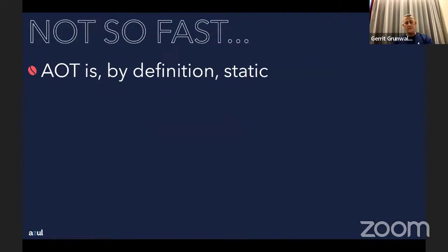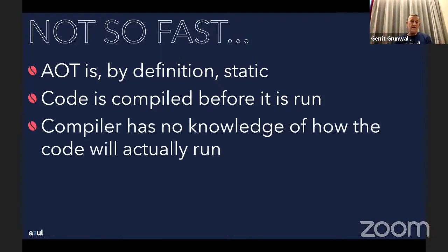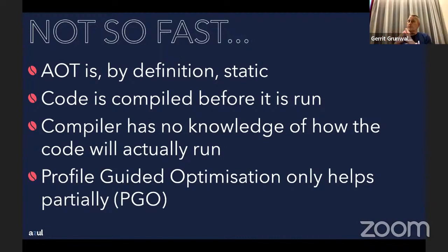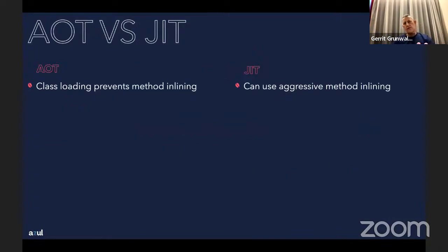Ahead-of-time compilation is by definition static — the code is compiled before it runs. The JVM compiles and optimizes code while it's running, but with AOT the compiler has no idea what the code is actually doing at runtime. You can improve this with profile-guided optimization: profile the running code, save the profile, and apply it to the compiled code. That gives you some benefit for the scenarios you profiled, but if something different happens at runtime, there's no way to react.